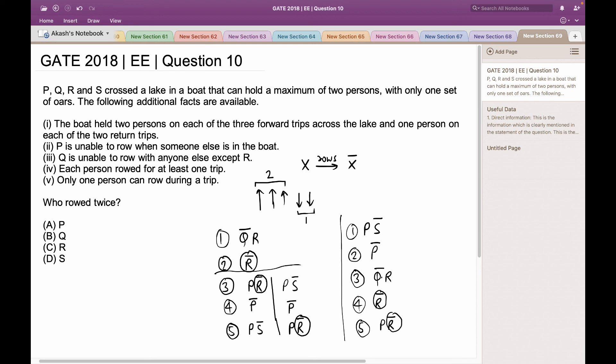And every person has rowed for at least once. So in all the possibilities, I can see that R is the player who has rowed twice. And this matches with option C. So option C is the right answer. Thank you.